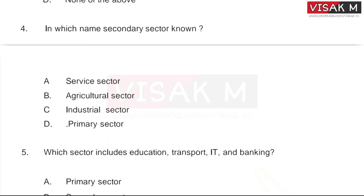Question four: In which name is the secondary sector known? Options: A, service sector; B, agricultural sector; C, industrial sector; D, primary sector. The right answer is option C, Industrial Sector.